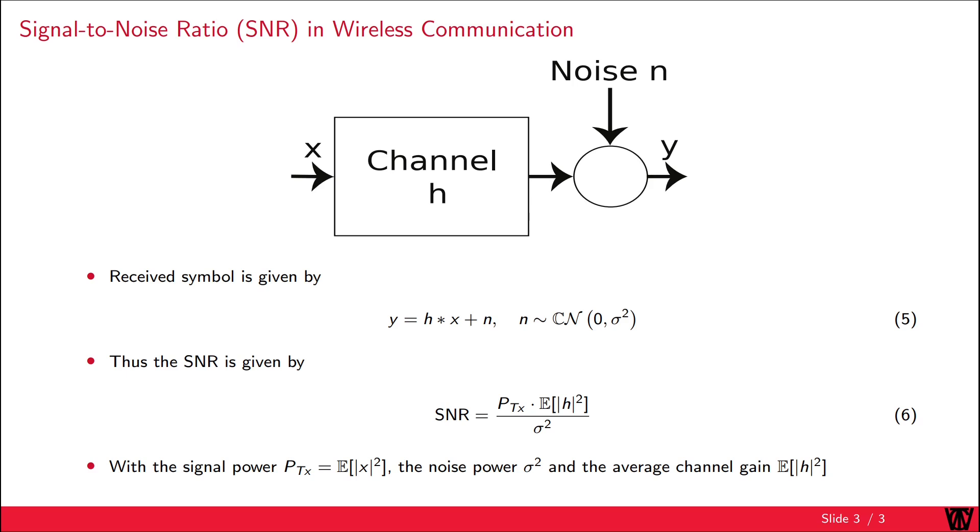The signal-to-noise ratio is given by the transmit power multiplied with the average channel gain divided by the noise power.